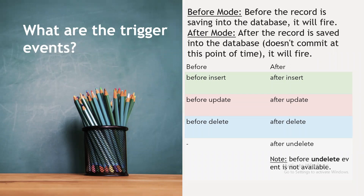What are the trigger events available in Salesforce? Triggers mainly have before and after modes. Before mode means before the record is saved into the database — the trigger will be fired before the record is saved. After mode means after the record is saved into the database it will be fired.